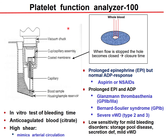To perform the PFA-100, whole blood is collected and pipetted into a chamber. The blood is sucked through capillaries and through a disk integrated with different substances such as collagen, epinephrine, or ADP. When platelets adhere and aggregate, the platelet plug closes the small hole and the instrument measures the closing time, or closure time. Different agonist disks allow assessment of different types of platelet problems.